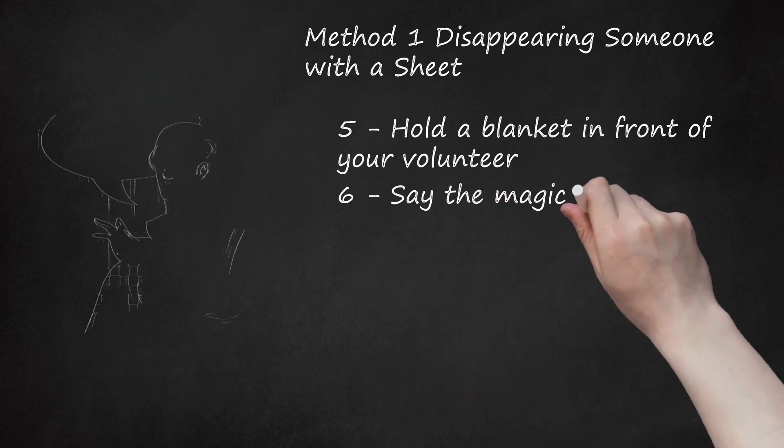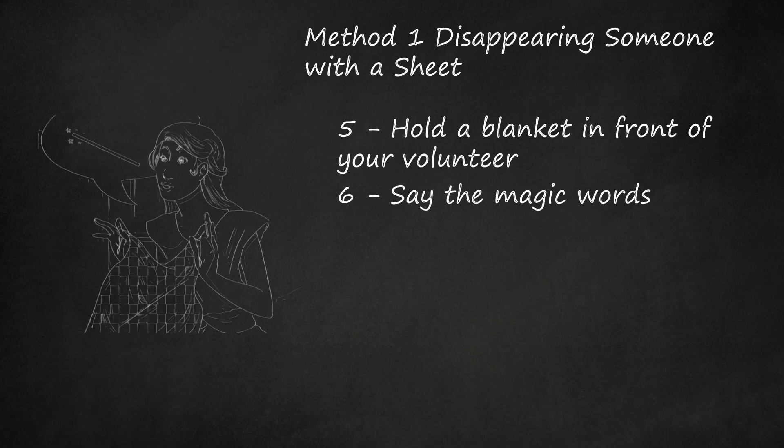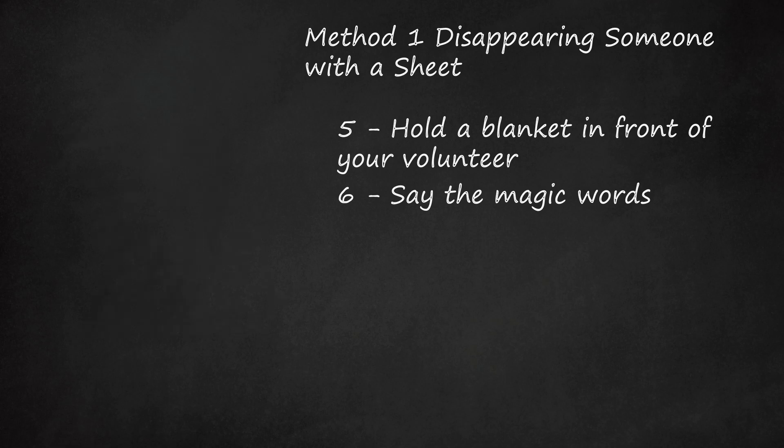Step 6 - Say the Magic Words. Count in your head to 5 while they silently hide. Talk to the audience briefly as your volunteer hides. This will give off the impression that less time has passed. Don't take too long or else your audience may suspect something.